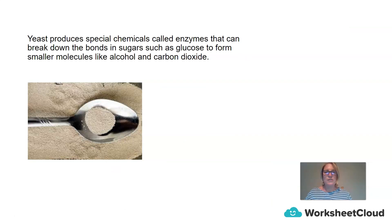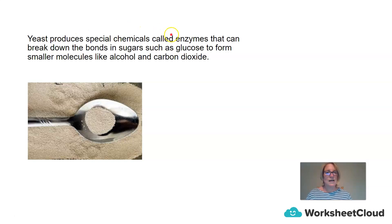Yeast produces special chemicals called enzymes, and they break down the bonds in the sugars, such as glucose, to form smaller molecules like alcohol and carbon dioxide. So if you are wanting to use fruits and vegetables to make alcohol, you do need to add some yeast to the reaction. Yeast doesn't actually take part in the reaction chemically at all — it just has enzymes that speed up the reaction.